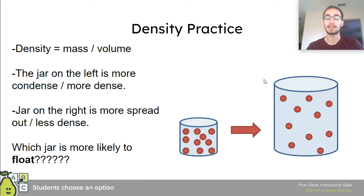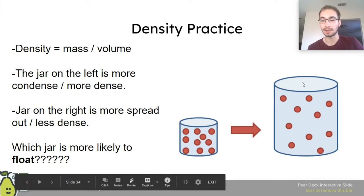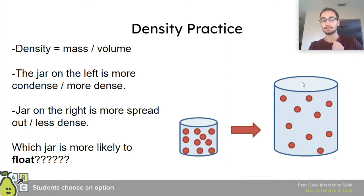So which jar is more likely to float? This is some review from last week. If the one on the left is more dense, the one on the right is less dense or more spread out, which one is going to float? You should realize more dense sink, less dense float.